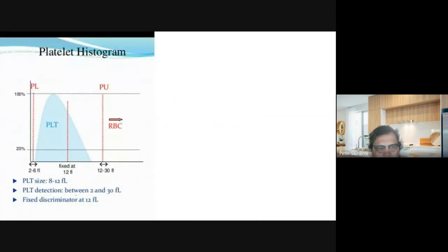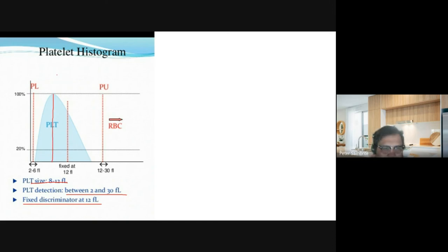For platelets, they are counted at 8 to 12 femtoliters. Detection is between 2 and 30 femtoliters, with the discriminator at 12 femtoliters. Cells entering between 2 and 30 femtoliters would be counted as platelets.